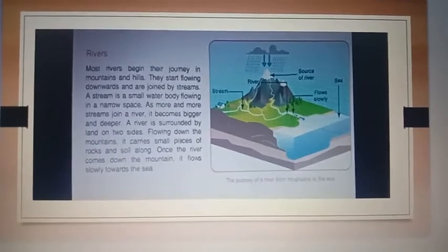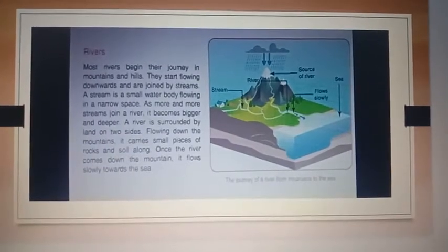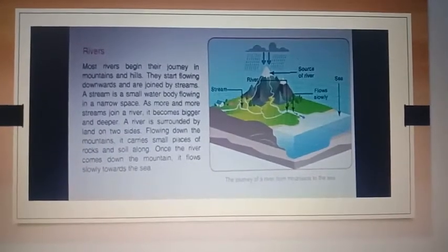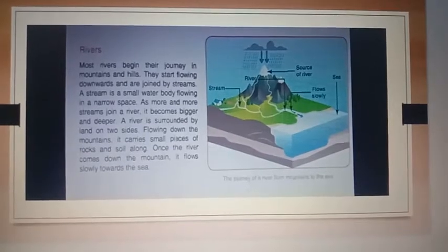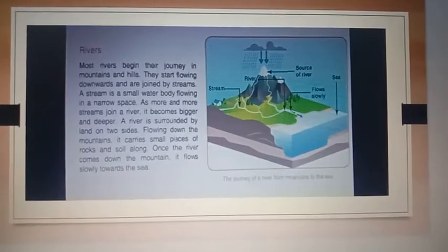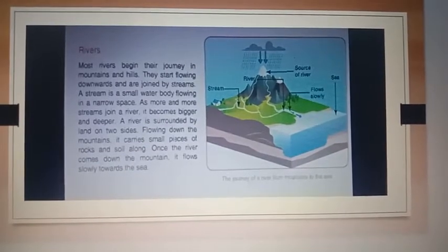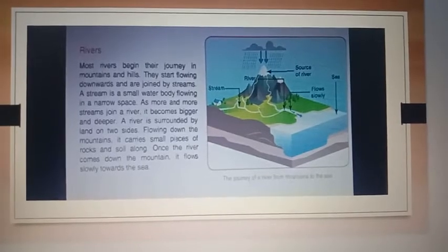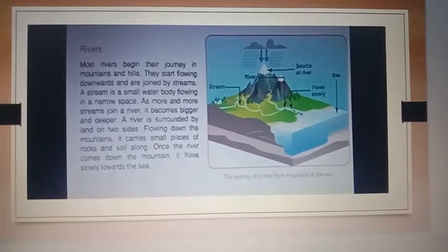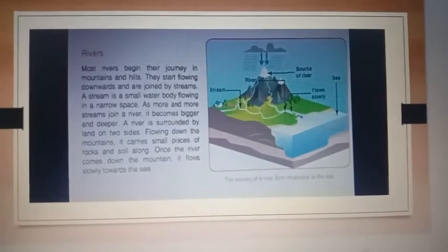A river is surrounded by land on two sides. There are so many rivers in India, such as the Ganga, Yamuna, Gomti, and so on.